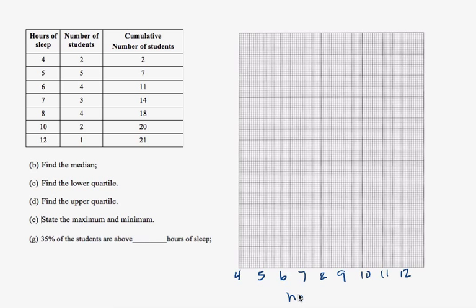And this is hours of sleep. Make sure you label your axes. And on the y-axis is going to be the frequency, the cumulative frequency. And I'll start here. I'll go zero, two, four, six, eight, ten, twelve, fourteen, sixteen, eighteen, twenty, and twenty-one.